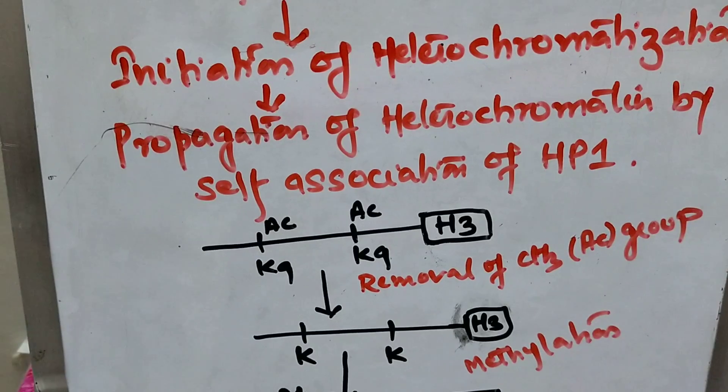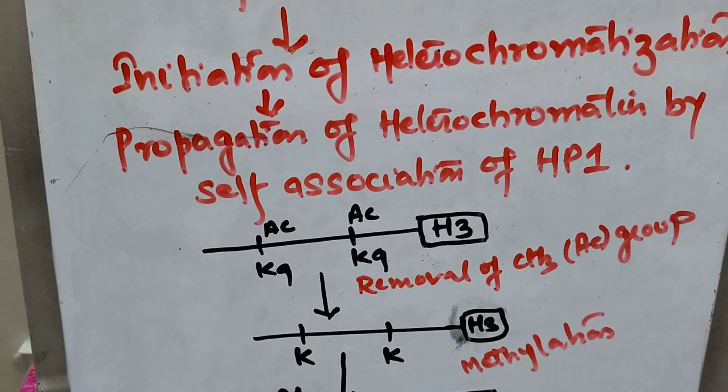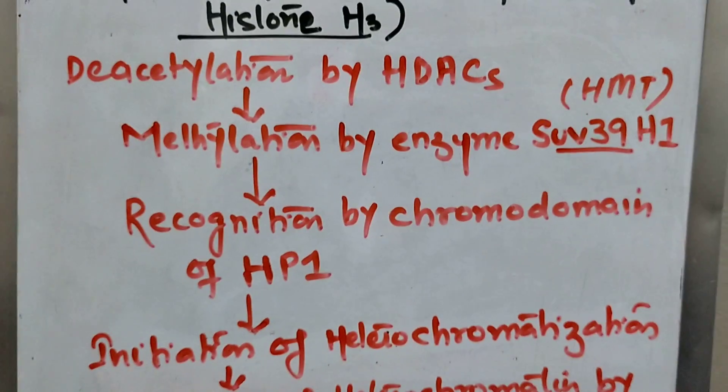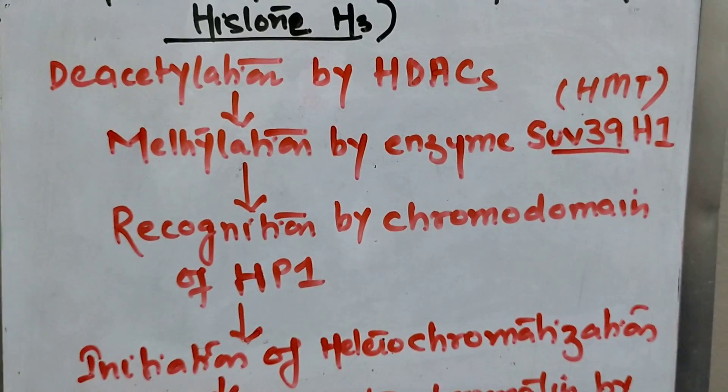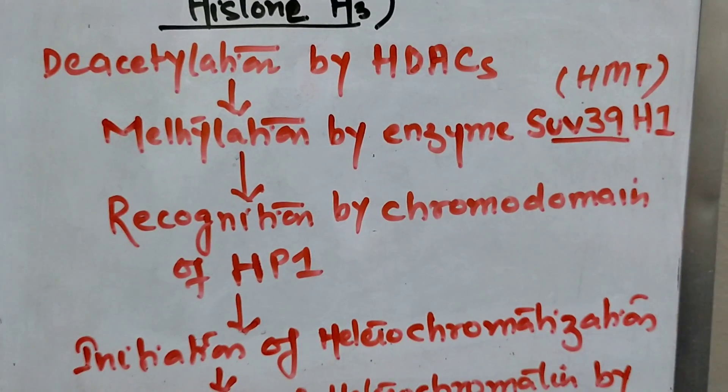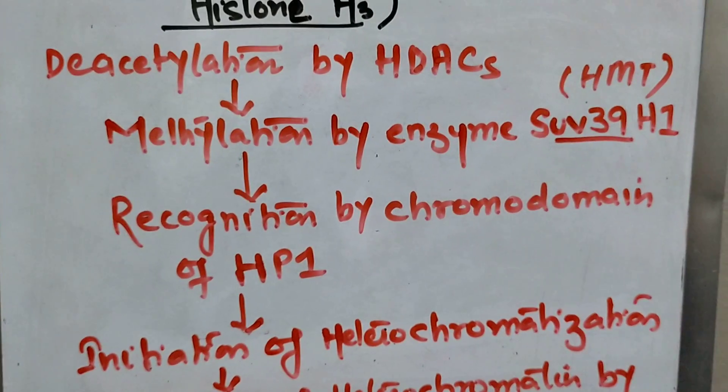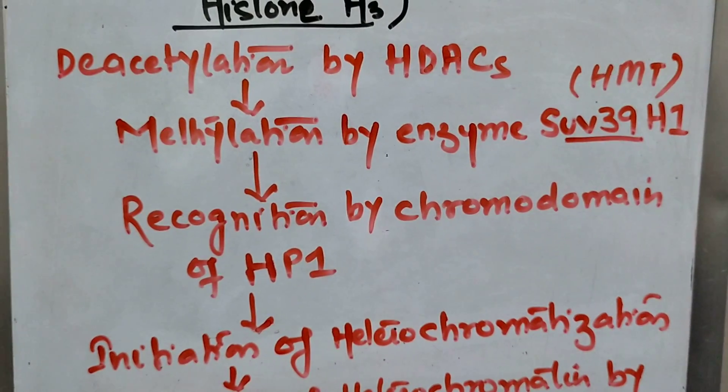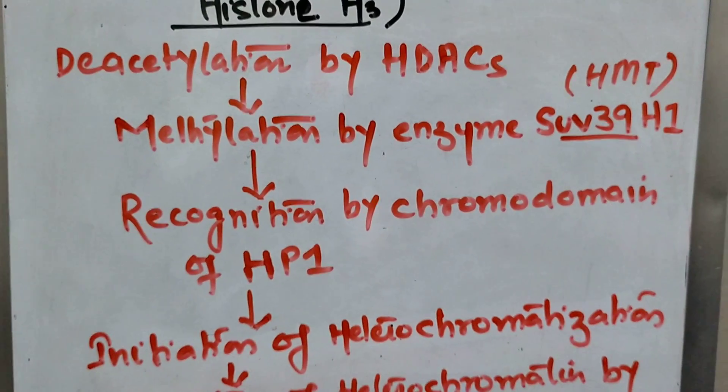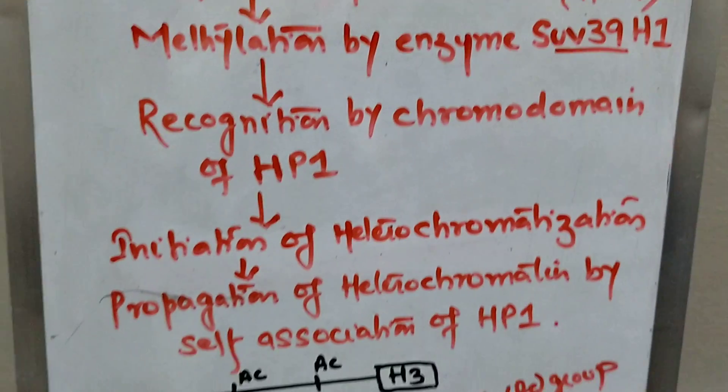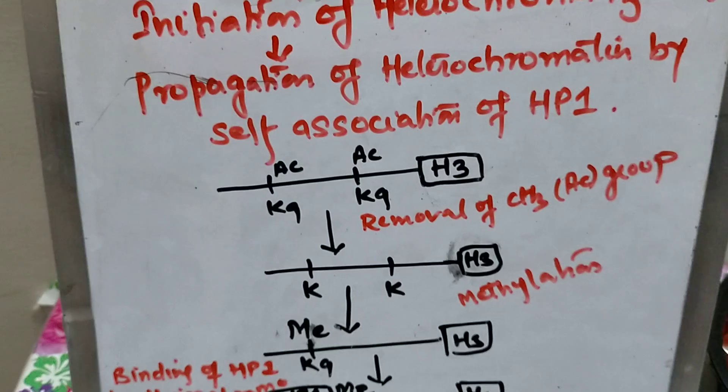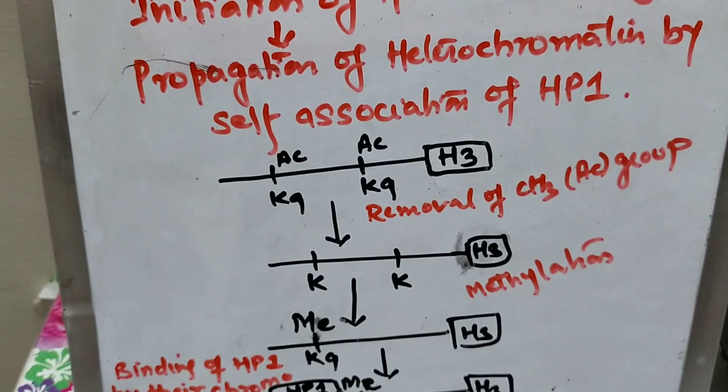The next step is we have to add the methyl group at this particular position. Now methylation is done by histone methyltransferases, SUV39H1. You don't have to remember this name, just remember methylation by histone methyltransferases. Next step, what happened? You can see here this ninth lysine is methylated now.